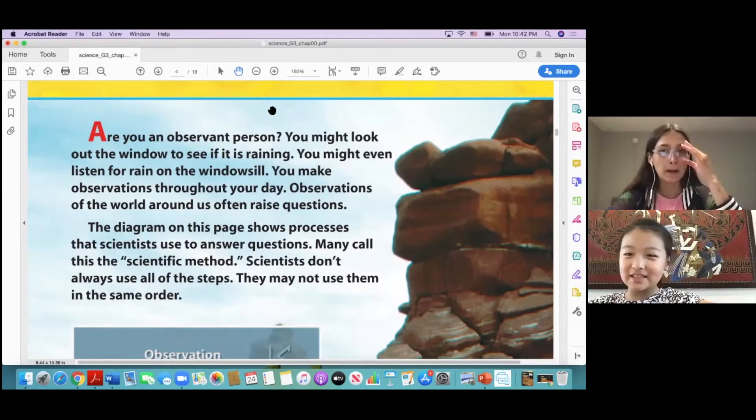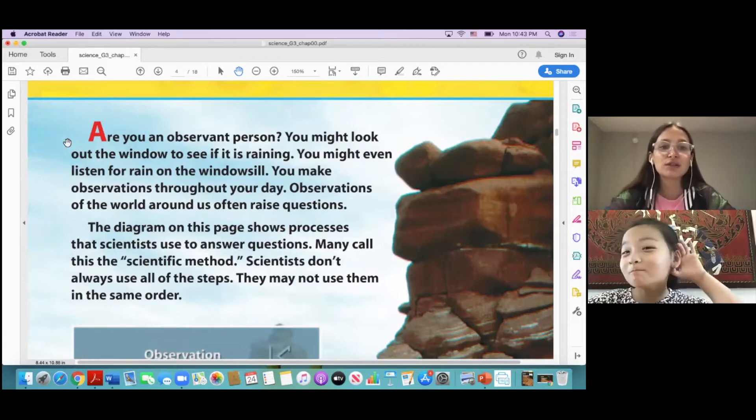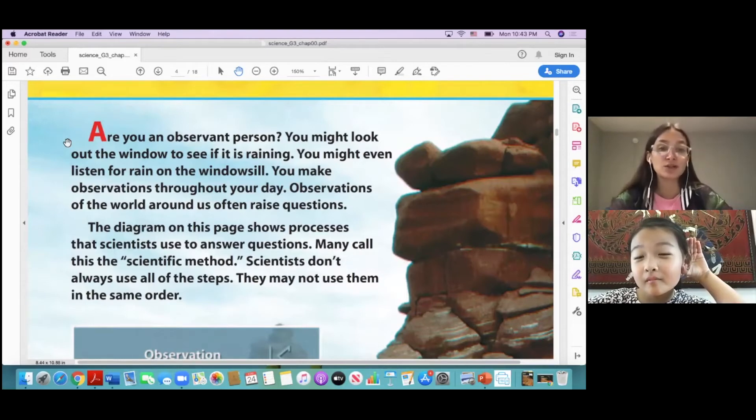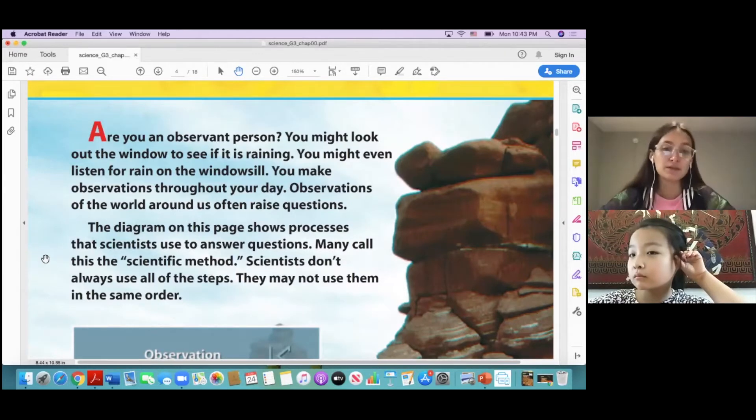Okay, so as long as you remember, are you an observant person? You might look out the window to see if it is raining. You might even listen for rain on the windowsill. You make observations throughout your day. Observations of the world around us often raise questions. The diagram on this page shows processes that scientists use to answer questions. Many call this the scientific method. Scientists don't always use all the steps. They may not use them in the same order.